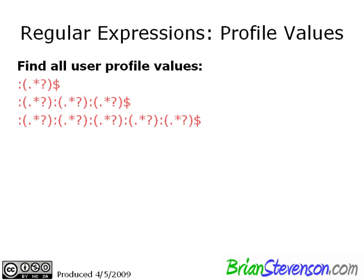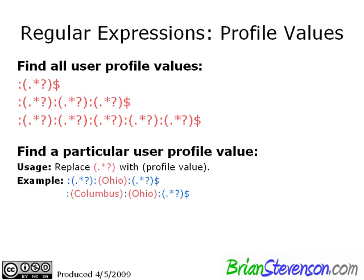Using regular expressions with profile values is a little different because you can have a variable length of profile values — you might have 1 or you might have 16 — so it can get tricky. You use a slightly different format: a wildcard sequence, then in parentheses the value such as 'Ohio', then ending with another wildcard sequence, which finds the word Ohio in the state profile value. A second example would be 'Columbus, Ohio'. Let's go ahead and create an example to show how that works.